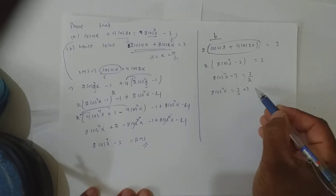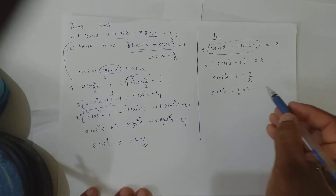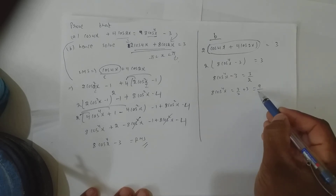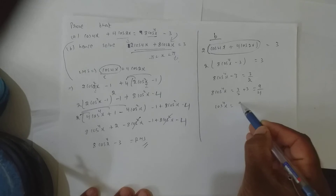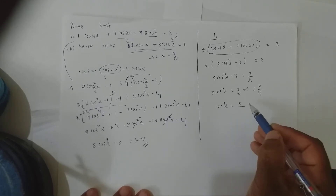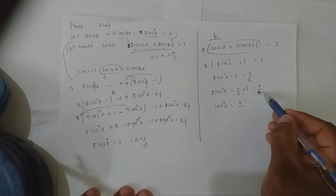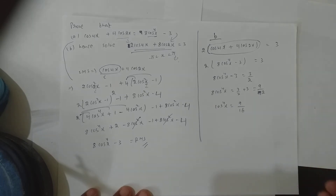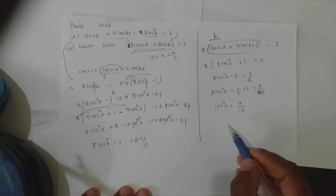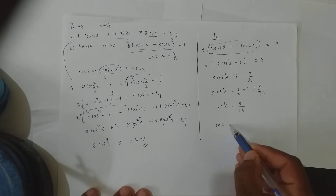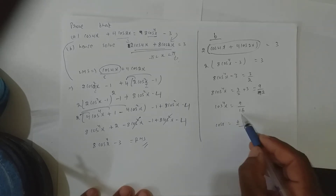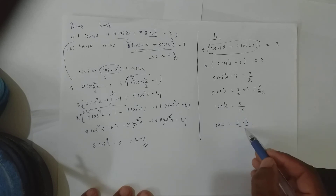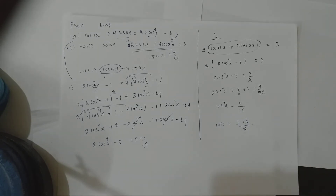How much will I get? 9/4. Now send 8 to that side, giving 9/16. So when the power 4 goes to that side, I get plus or minus: the root of 3 remains and 2 to the power 4 to the power 1/4 cancels, leaving only 2. So cos x = ±√3/2.